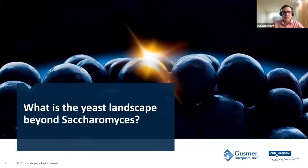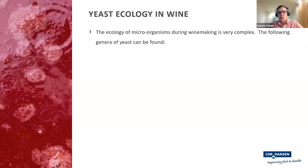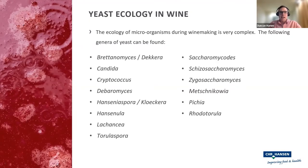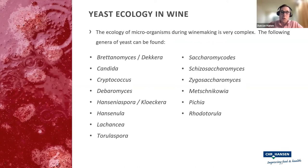What is the yeast landscape beyond Saccharomyces? If we look at the ecology of wine, it's actually very complex. There's quite a broad range of microorganisms. If we just look at yeast, we can find all sorts of things. Obviously, we've got some things we really don't want, like Brettanomyces, also known as Dekkera. We've got Candida, Cryptococcus, Debaryomyces, Hanseniaspora also known as Kloeckera, and Hansenula.